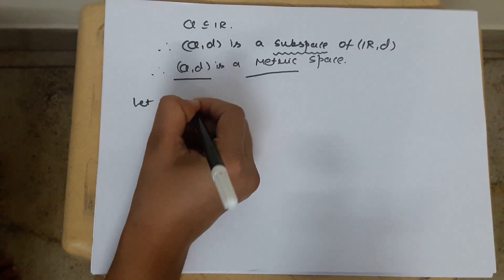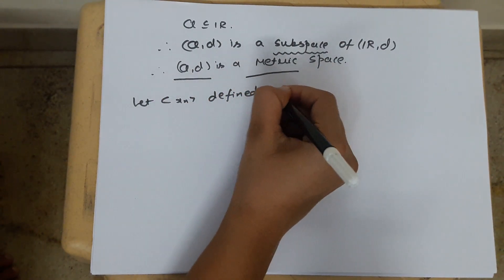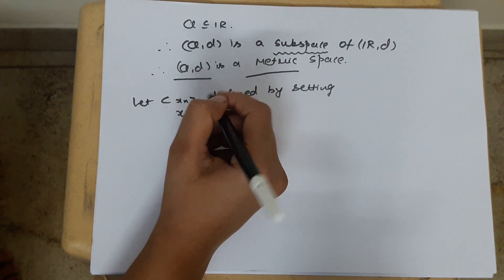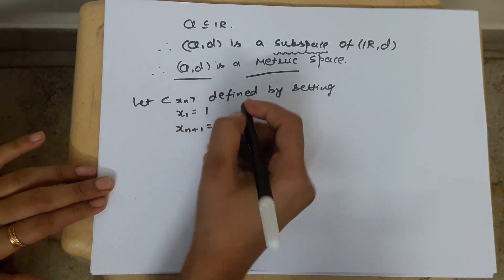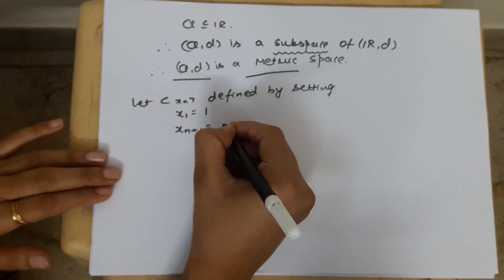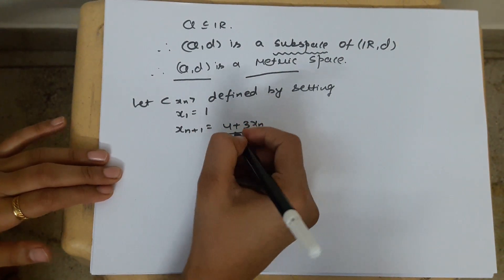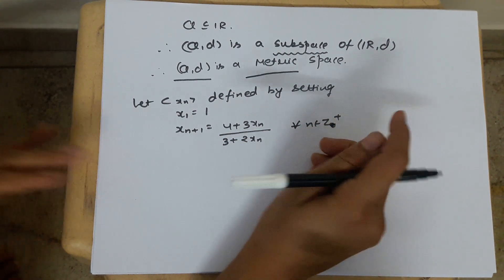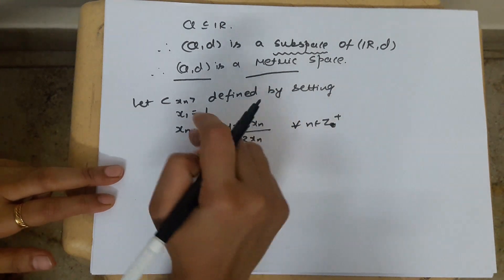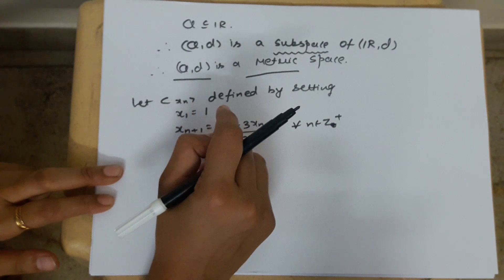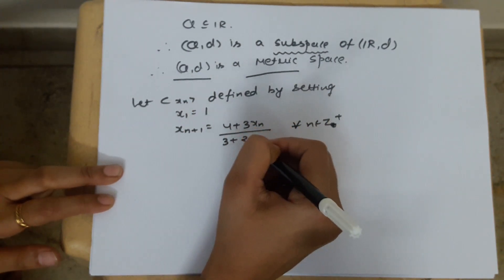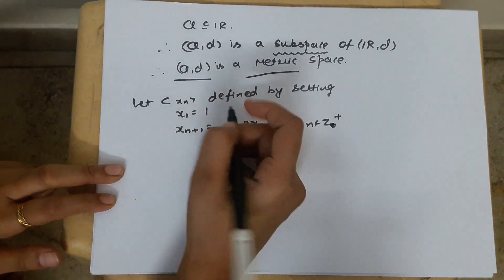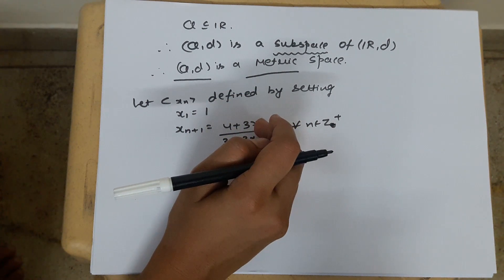Now we are defining the sequence. Let Xn be defined by setting X₁ = 1, and Xn₊₁ = (4 + 3Xn) / (3 + 2Xn) for all n belonging to Z⁺. That is, we define each new value based on the previous value. X₂ is defined from X₁, X₃ from X₂, X₄ from X₃, and so on.